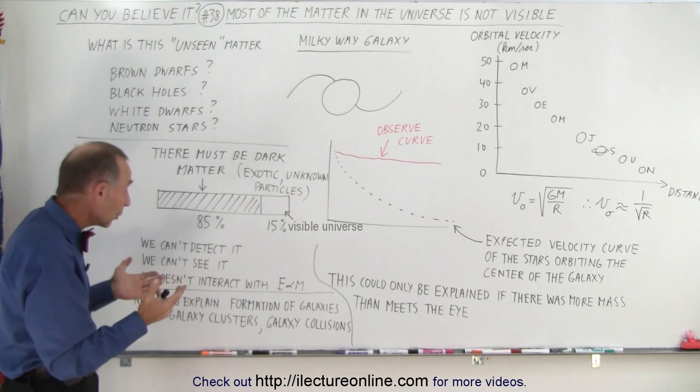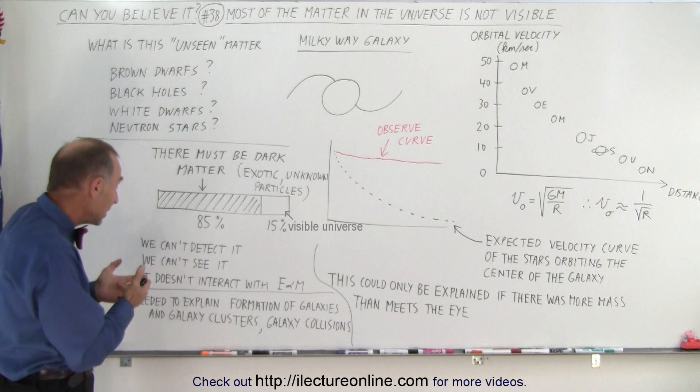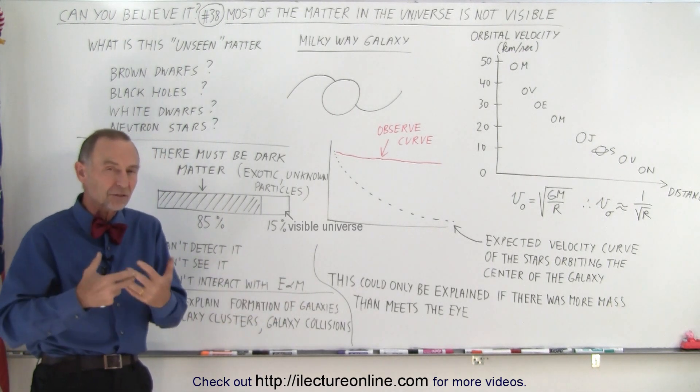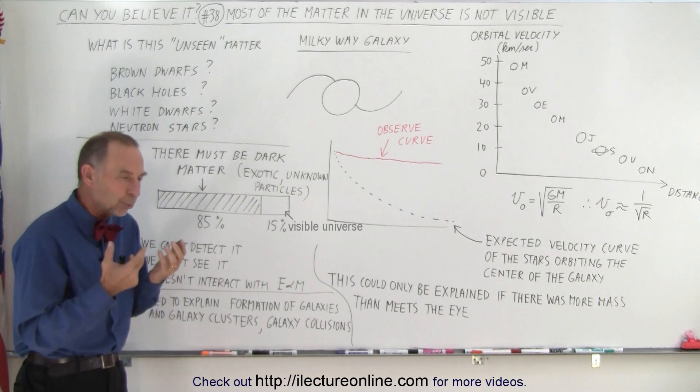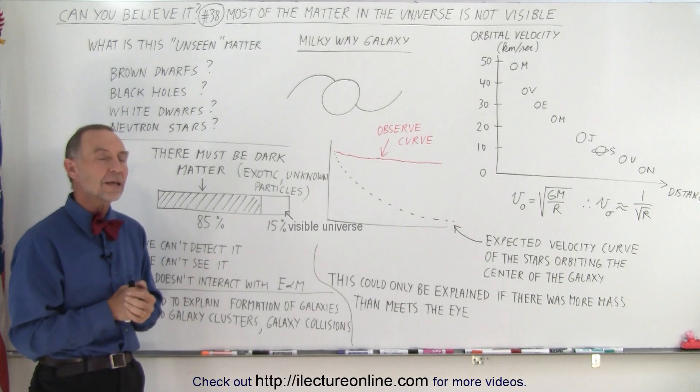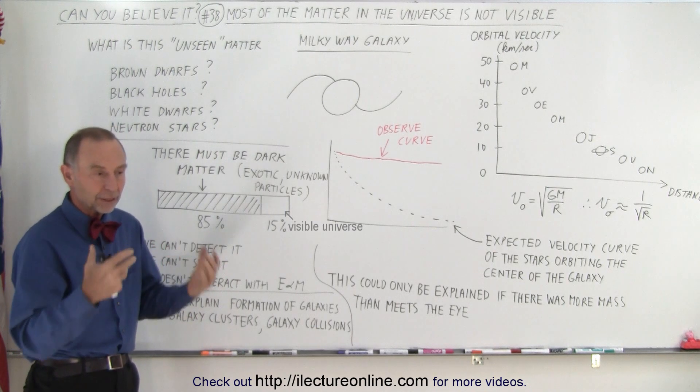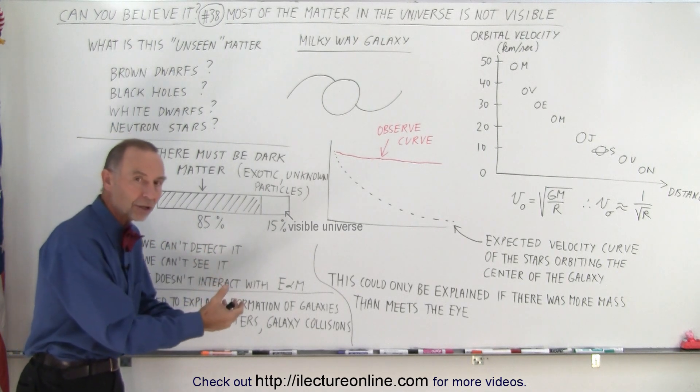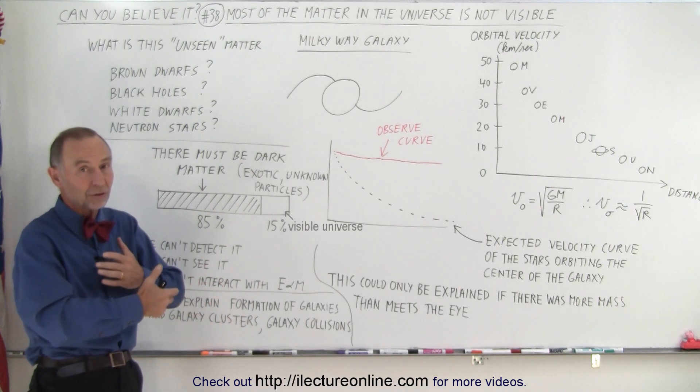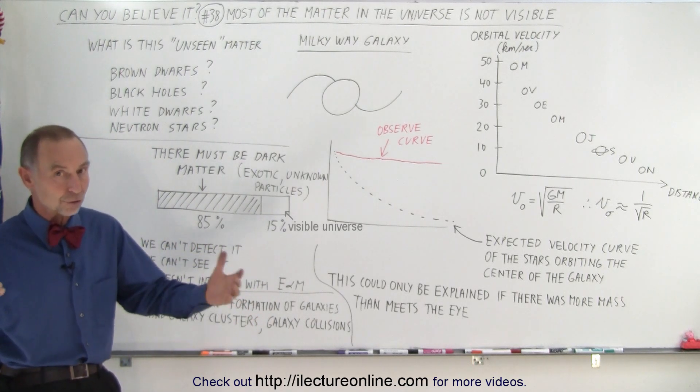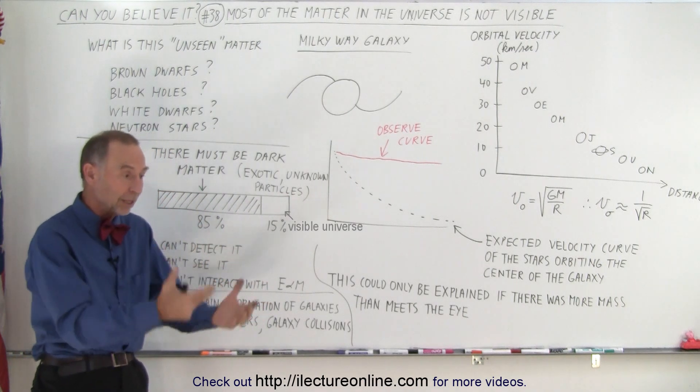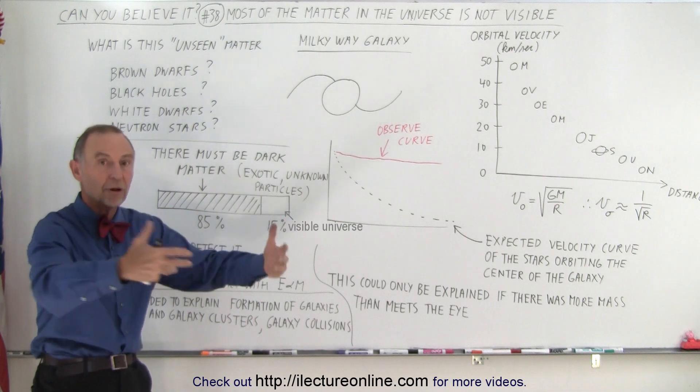Again, how do we know it's there? Well, we need it to explain different things, such as galaxy formation and galaxy cluster formation can really not have happened the way it did, unless there was more matter than we can see. We've done computer simulations, we've done it without the dark matter present, we've done it with the dark matter present, and without the dark matter present, we would not currently have the universe that we have. But if we assume the dark matter is there, all our simulations then indicate that the universe would evolve the way it did.